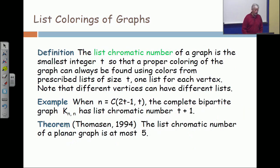All right, here's another variation on coloring that comes up surprisingly often. It's the notion of a list coloring. When you're trying to color a planar graph with four colors, on each vertex you have to choose one of the colors 1, 2, 3, 4.